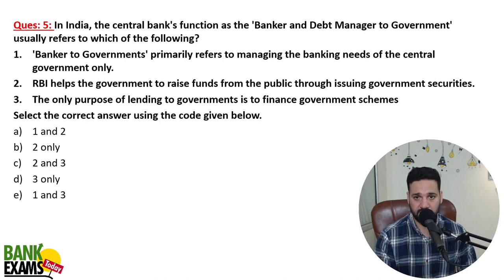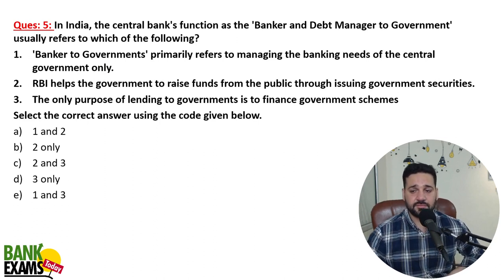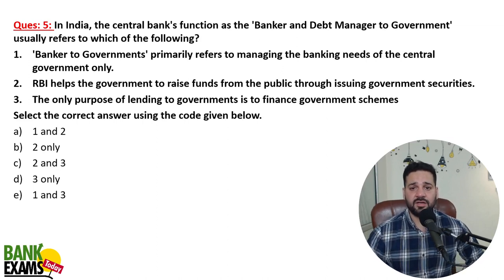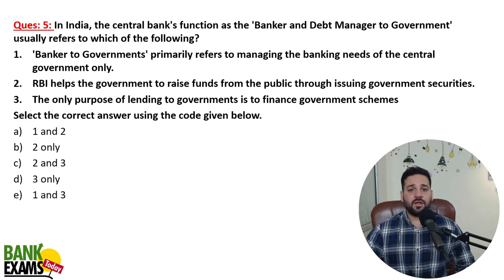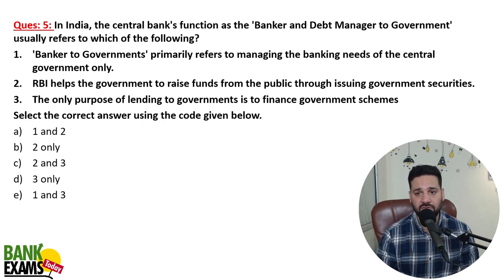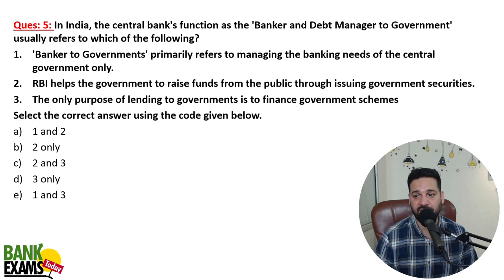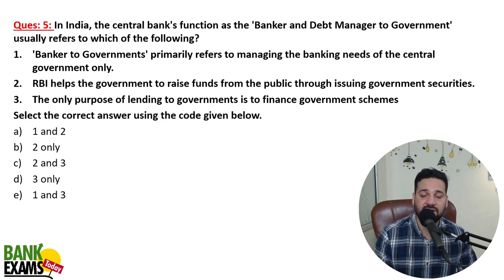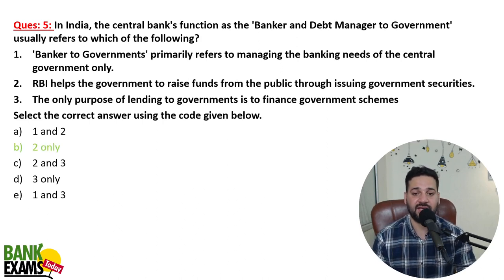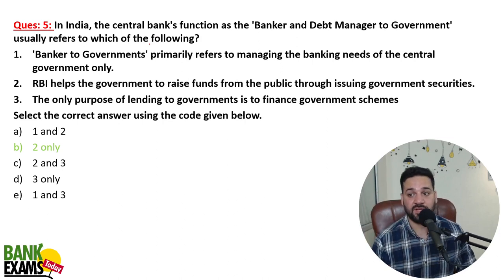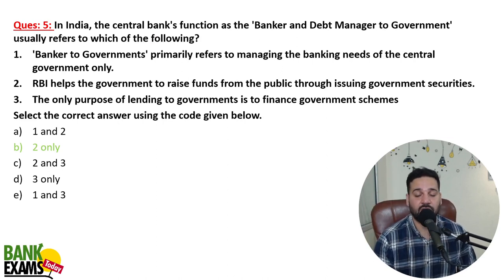In India, the central bank functioning as a debt banker and debt manager to the government usually refers to which of the following? Option: banker to government primarily refers to managing banking needs of the central government only; RBI helps government to raise funds through public issuing; the only purpose of lending to government is to finance government schemes. The second statement is correct — RBI helps the government to raise funds from the public through issuing government securities, such as sovereign gold bonds and sovereign green bonds.